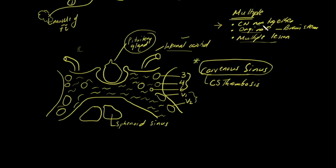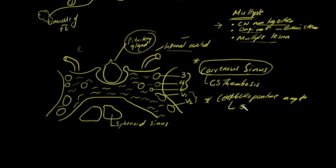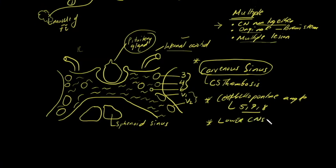Other areas where cranial nerves run together include the cerebellopontine angle, where cranial nerves five, seven, and eight are affected. There is also jugular foramen syndrome, affecting nine, ten, and twelve. If you have your lower cranial nerves — nine, ten, eleven, and twelve — affected together, especially a combination of ten, eleven, and twelve, you need to determine whether it's an upper motor neuron or lower motor neuron lesion.